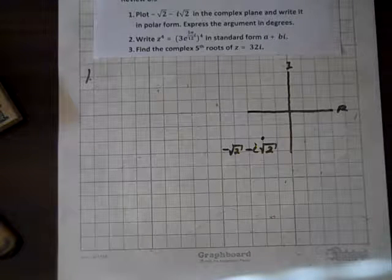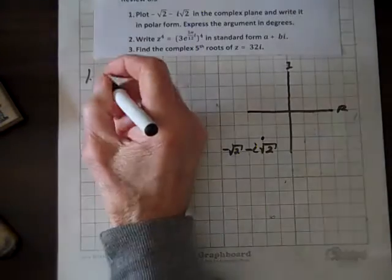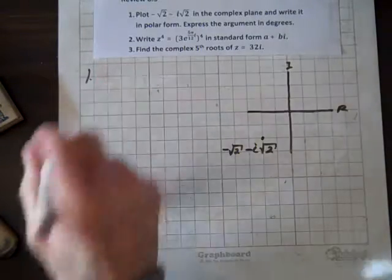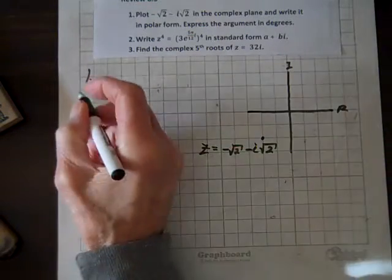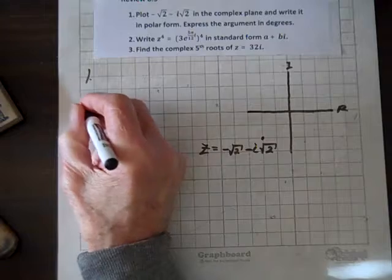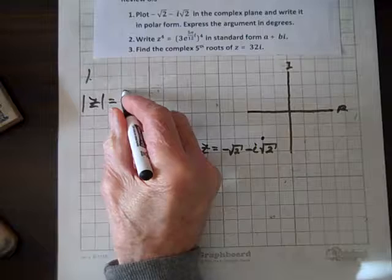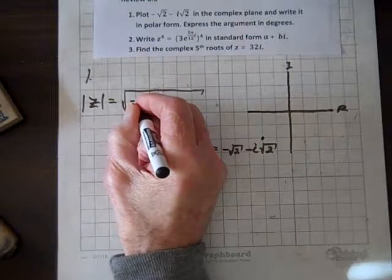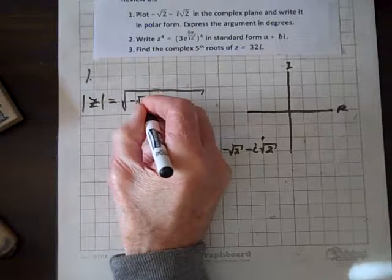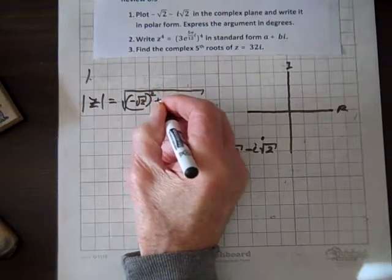And so we first have to find the modulus, which is the magnitude. And so if we call this z, for example, then z equals the modulus of z. Mod z is negative root 2, just a Pythagorean theorem squared, plus,